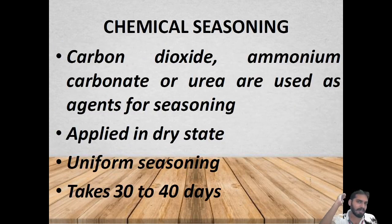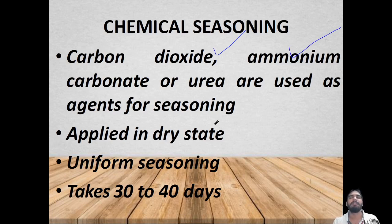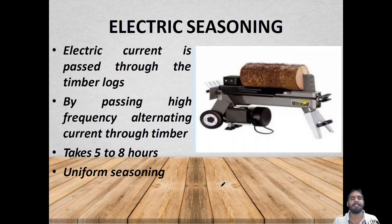Next comes chemical seasoning. Certain chemicals like carbon dioxide, ammonium carbonate, and urea are applied above the woods in dry state. Uniform seasoning takes 30 to 40 days.